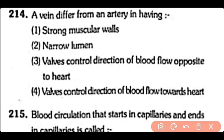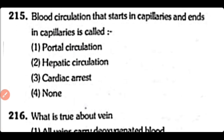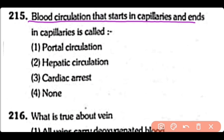Q214. A vein is different from an artery in having valves that control the direction of blood flow opposite to the heart. Blood circulation that starts in capillaries and ends in capillaries is known as portal circulation. So the correct answer is Option 1.